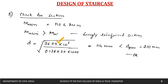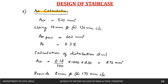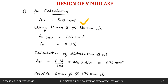For the area of steel, substituting into the formula Ast = 0.5 × fck/fy × [1 − √(1 − 4.6 × Mu / (fck × b × d²))] × b × d, we get Ast = 530 mm². Assuming 10 mm diameter bars, the spacing = (π/4 × 10²) / 530 × 1000 ≈ 130 mm center to center. We provide 10 mm dia bars at 130 mm c/c.